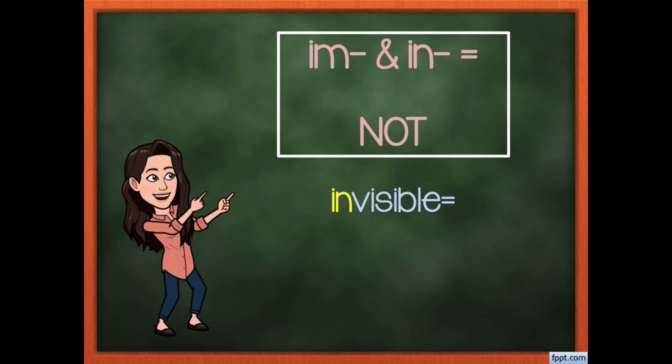Let's take a look at another word. I have the word invisible. We know that visible means you can see something. However, if I put the prefix in- in front of visible, now I change the meaning to mean not visible or not being able to be seen.